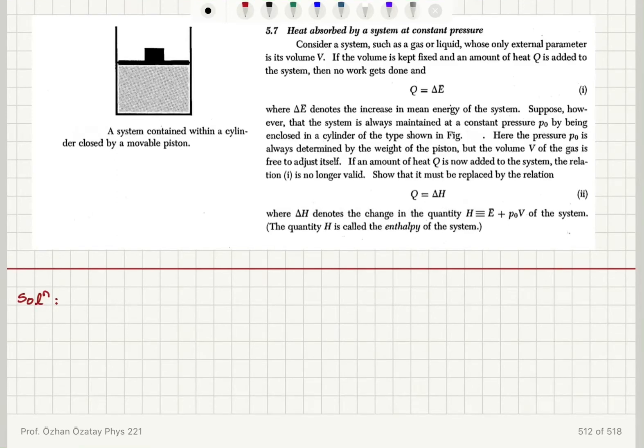Heat absorbed by a system at constant pressure. Consider a system such as a gas or liquid whose only external parameter is its volume. If the volume is kept fixed and an amount of heat Q is added to the system, then no work gets done and Q is equal to delta E bar.